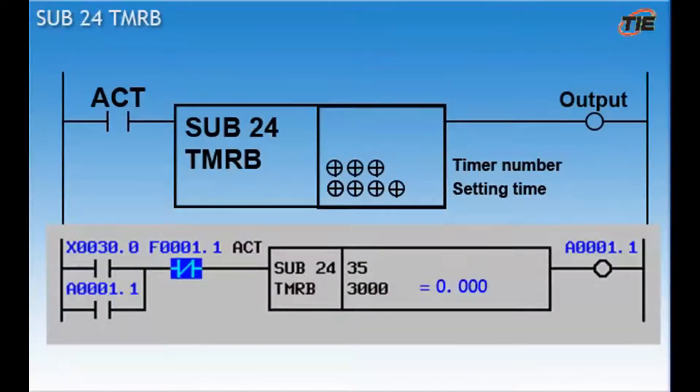The sub 24 function is known as a TMRB timer. This is a fixed timer. This means that you can't modify the timer value. This timer behaves just like the TMR variable timer. This timer does not have an accuracy level and can be set up to around 546 minutes. When the ACT signal command goes high, the timer will begin to time out. Once it's timed out, it will turn on the output. This output will stay on as long as the action command signal is high. If ACT goes low for even one scan of the ladder, the output will turn off and the process starts over again.